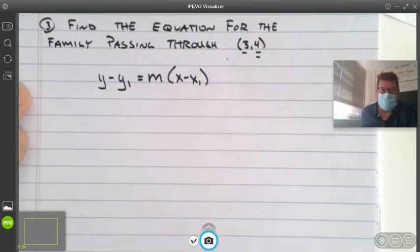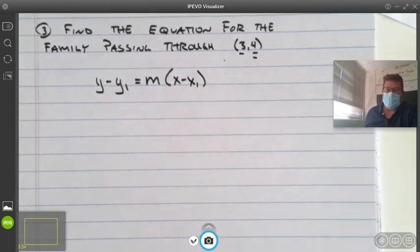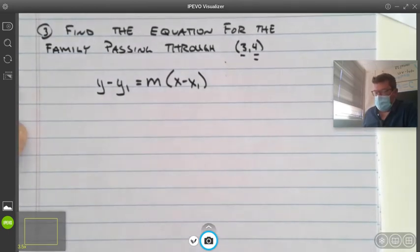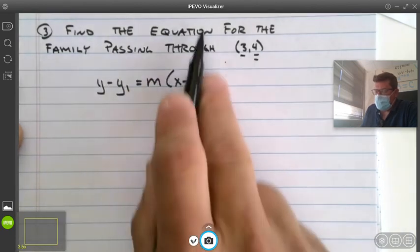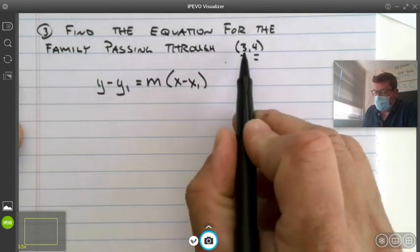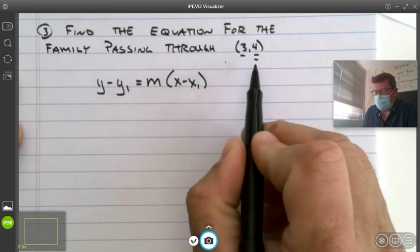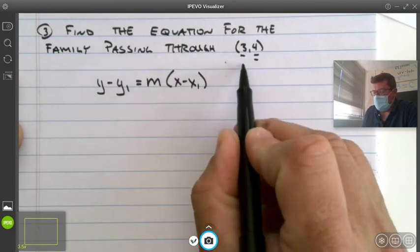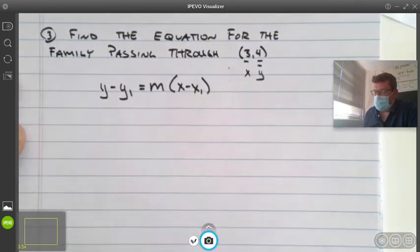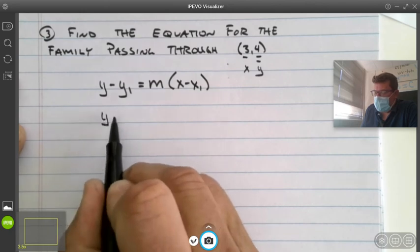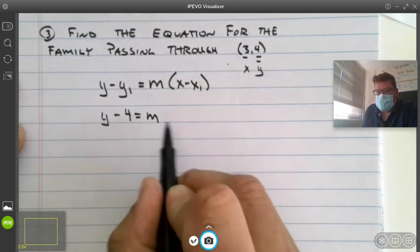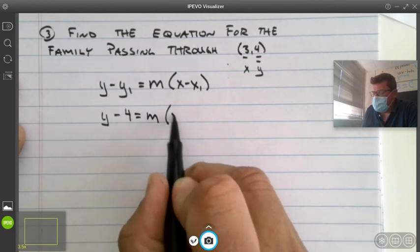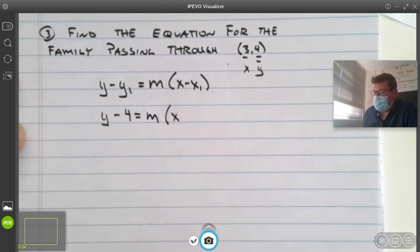Y minus y1 equals m times x minus x1. Point slope form for the equation of a line. It didn't tell you what form it had to be in, so I'm going to use the point slope. We don't know anything about the slope, but we know that it has to pass through and each family member would have to pass through the ordered pair three-four. Everywhere you see a y1, replace it. We don't know what the slope is going to be. It's going to be the variable. And?